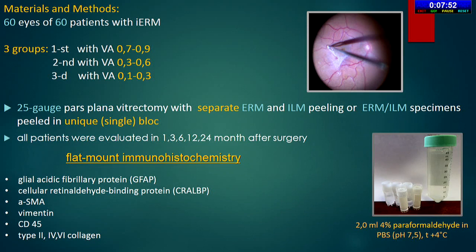Retinal Müller cells, astrocytes, and hyalocytes were assessed by expression of glial fibrillary acidic protein (GFAP), a marker of cell activation. We also examined CD45, alpha-smooth muscle actin as a myofibroblast marker, and type 2, 4, and 6 collagens.